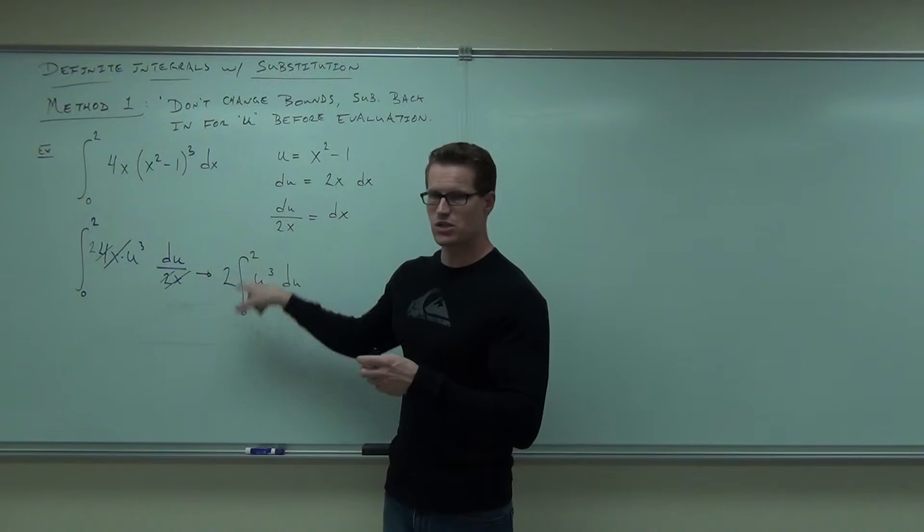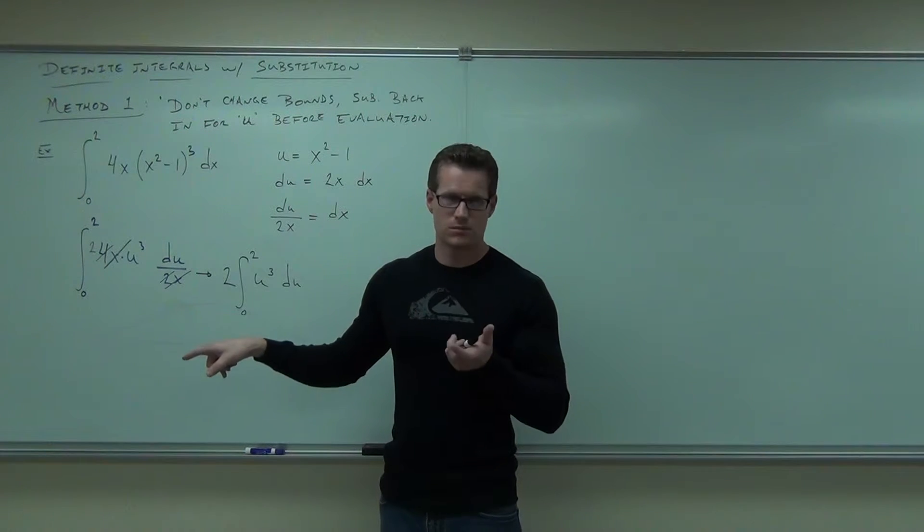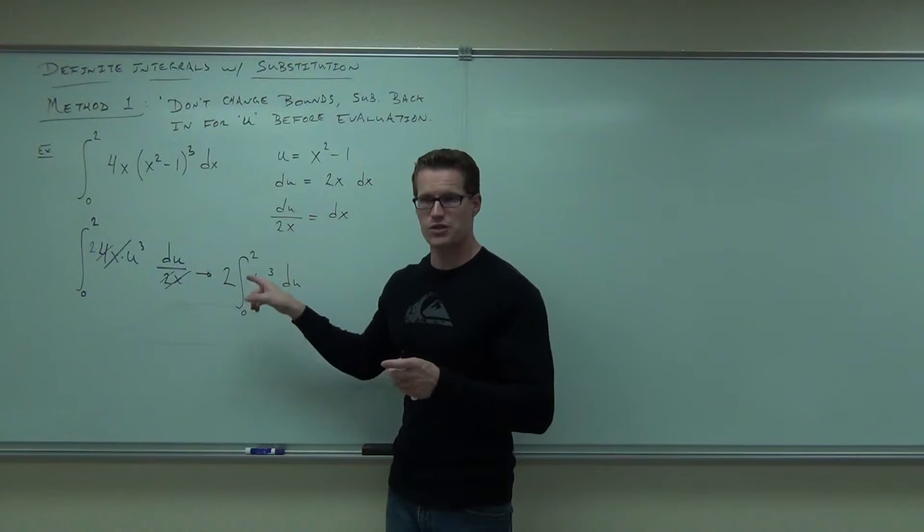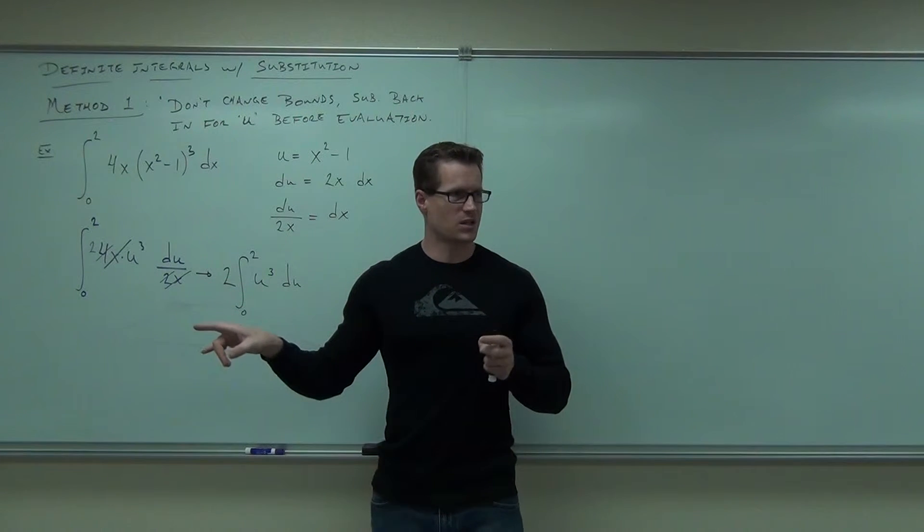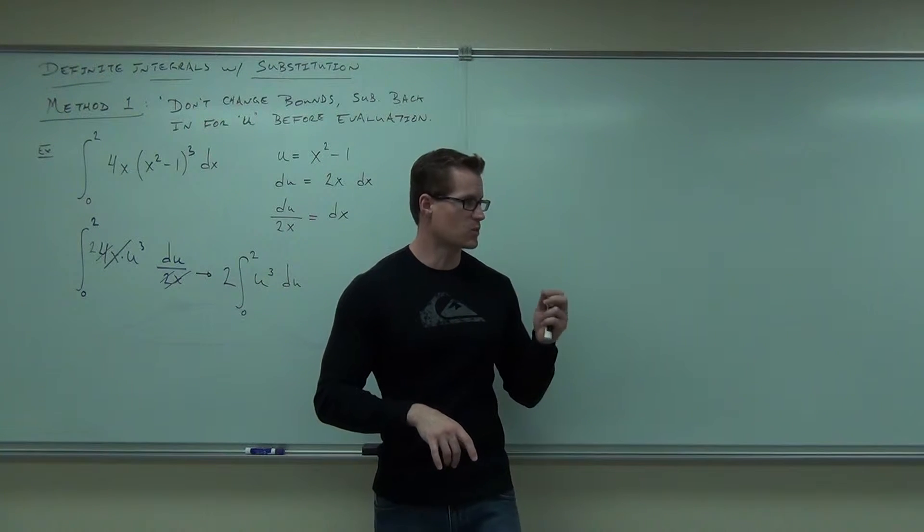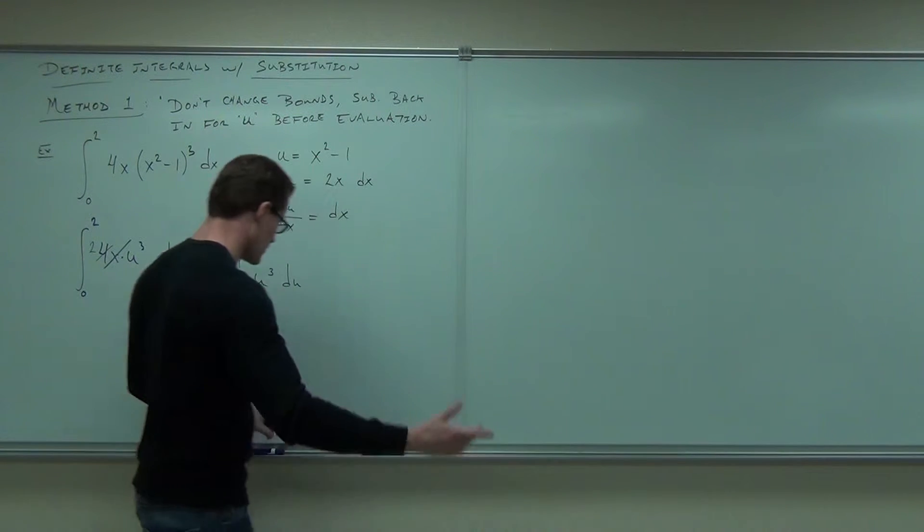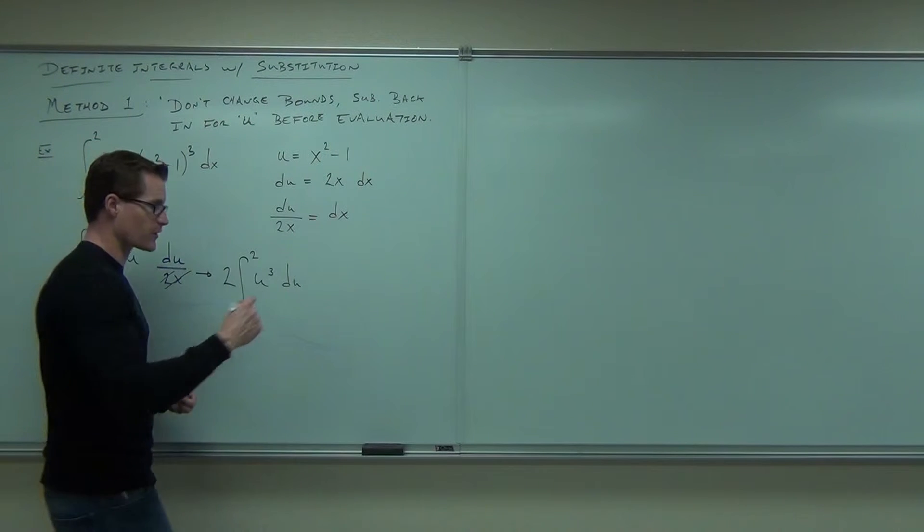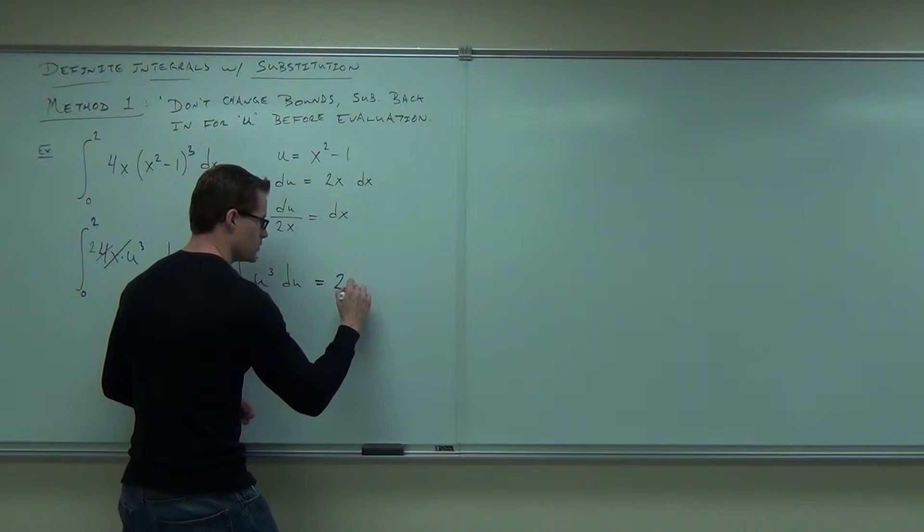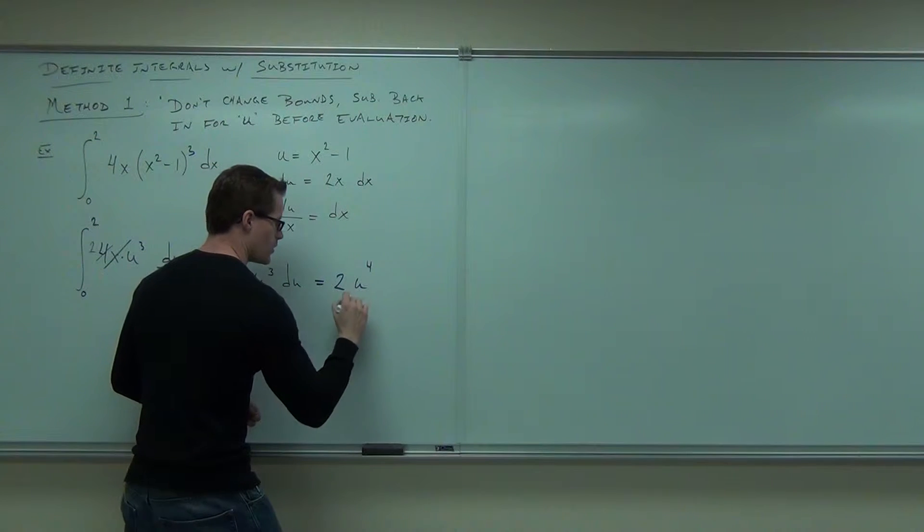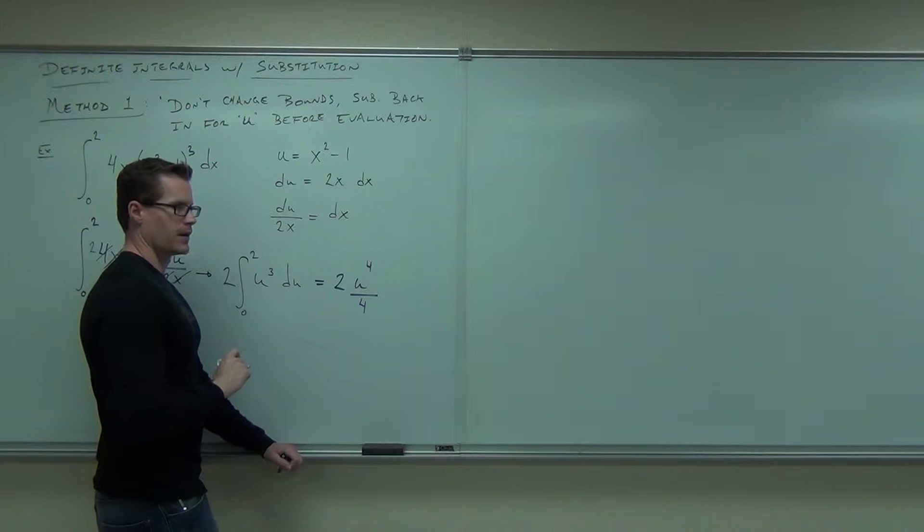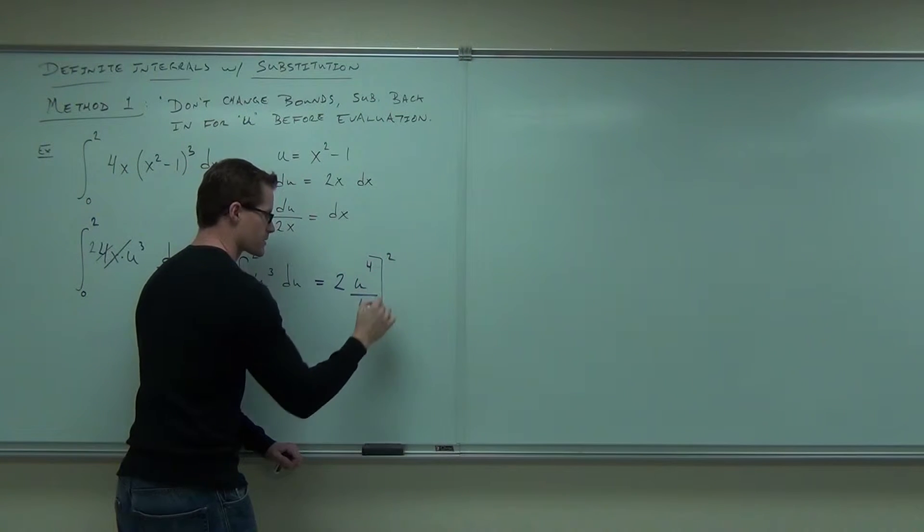What were these bounds originally in? So, we kind of have bounds that don't match our integral right now. Which sometimes leads to problems because what people do often is they'll do this. They'll go, okay, hey, I know how to take an integral. It's very easy. I'm going to have 2u to the 4th over 4. And then they do this.